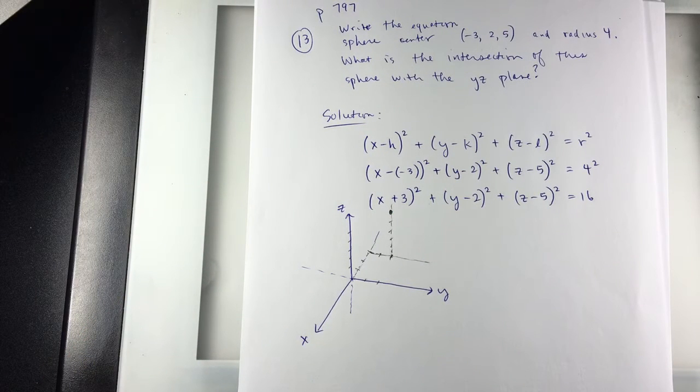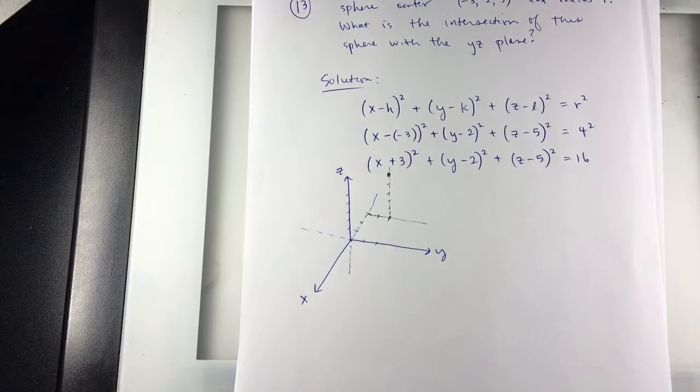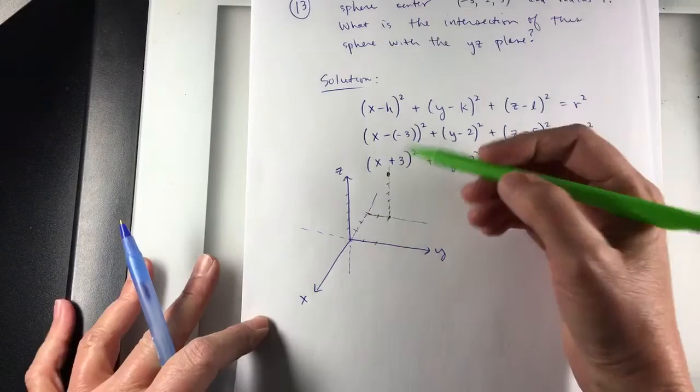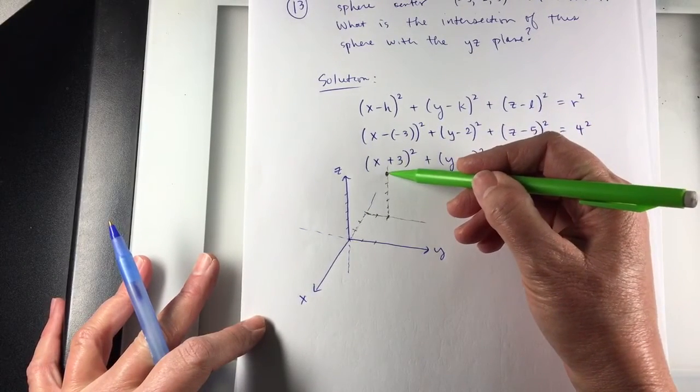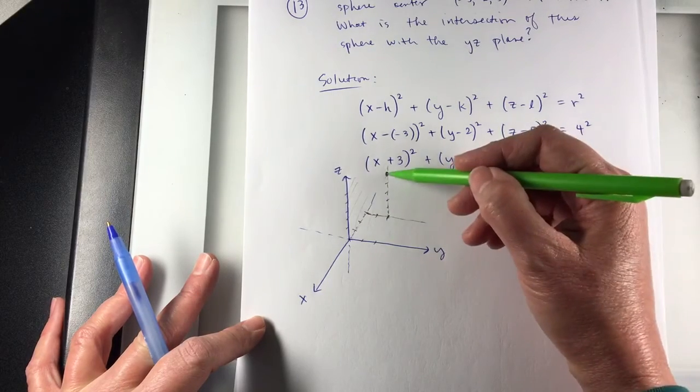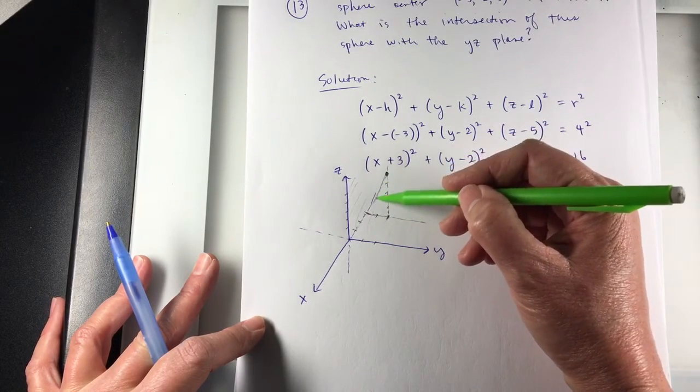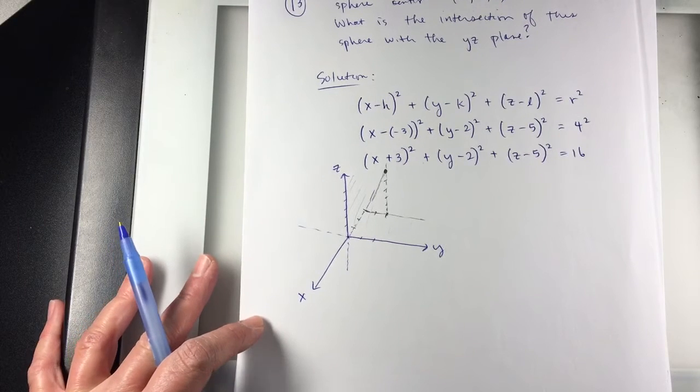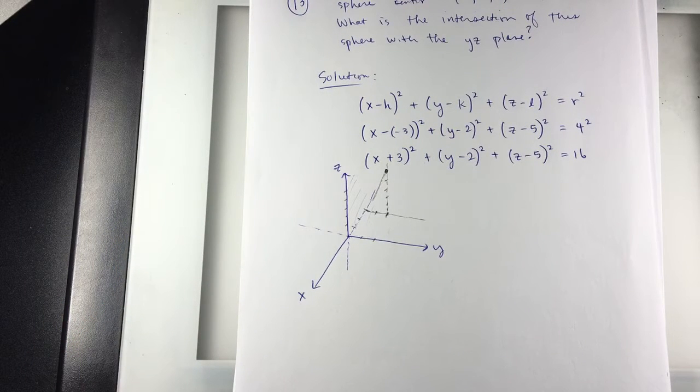I'm not going to draw the sphere, but I'm going to kind of think about what this means. They want to know about the yz plane. So what is the distance from this point? In fact, here's my yz plane. The distance to the yz plane: three units straight, the most direct route to the yz plane.